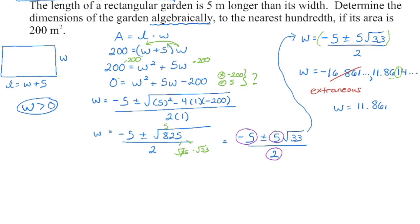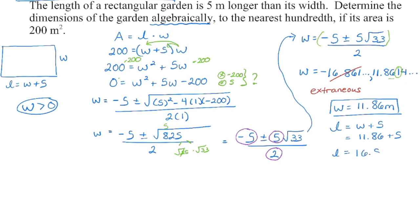Check your units — this is in meters. Now we also need to get the length. The length is w plus five, and because we're doing this algebraically, we set up length equals w plus five. W is eleven point eight six; add five to that, and the length is sixteen point eight six meters. If you want to verify this, try multiplying them together. We rounded each value, so these are not exact, but you should get close to the 200 we started with.